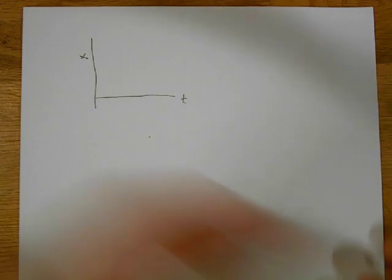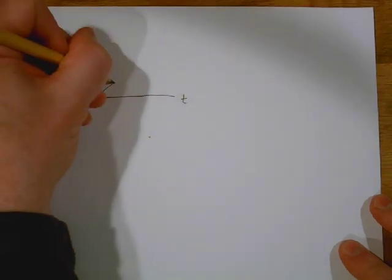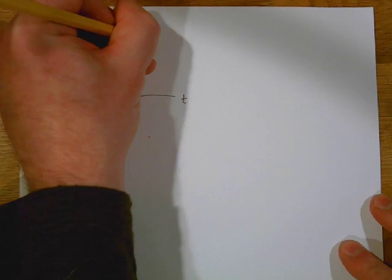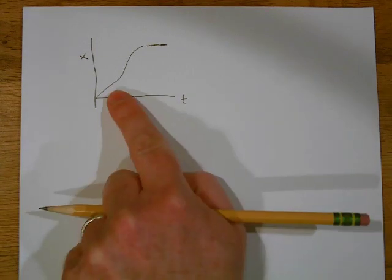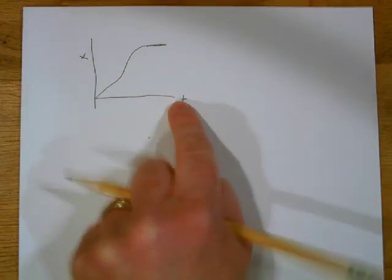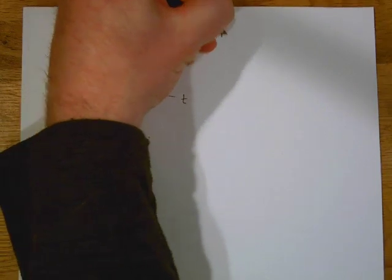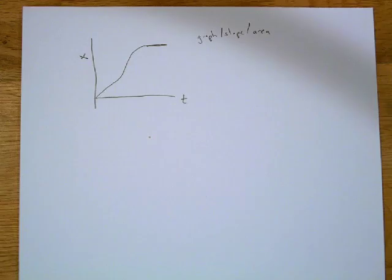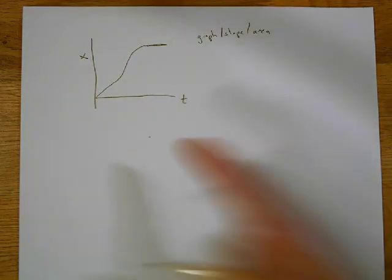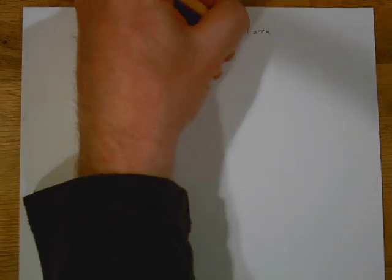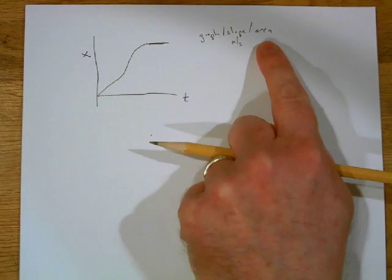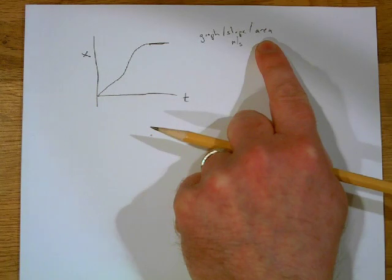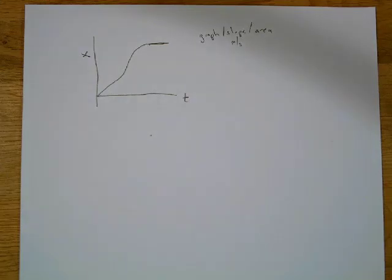Let's say I have a displacement versus time graph. Remember, it's always graph, slope, or area all year long — that's what's going to tell you something. In this case, your graph tells you about your displacement. Your slope would be meters per second — rise over run — so that's going to tell you about velocity. Your area would be meters times seconds, which is nothing useful here. Do not memorize things — understand and apply.